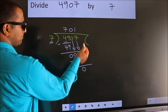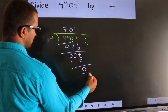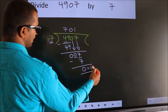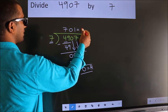No more numbers to bring it down. So we stop here. This is our remainder. This is our quotient.